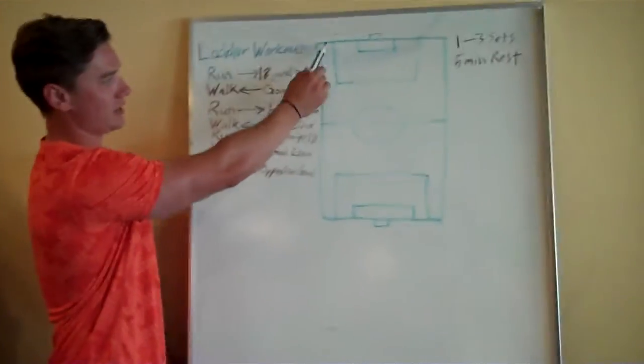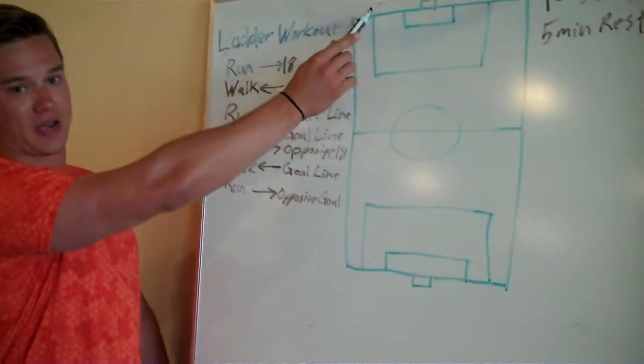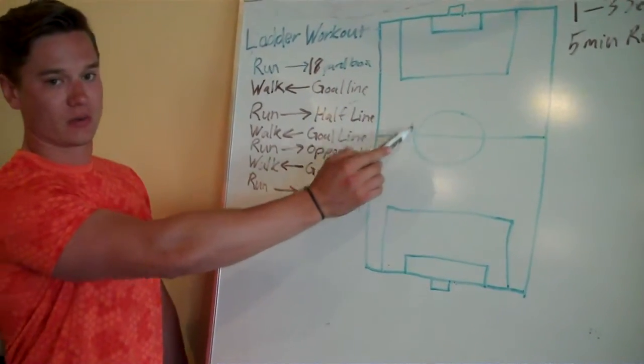What you're going to do is you're going to run out to the 18-yard box. So you'll start on the goal line here, run out to the 18-yard box, walk back. You'll run out to the half line, walk back.